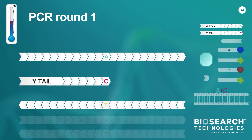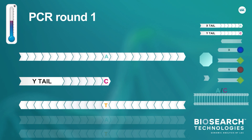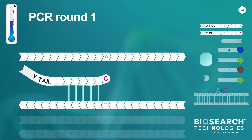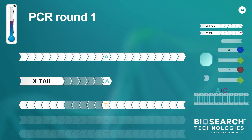The target-specific part of these primers is complementary to the template DNA. The base difference at the 3' end corresponds to the SNP target, and it is this difference that drives the competitive PCR. Both primers have the potential to anneal to the template DNA, but the primer that does not contain the correct base at its 3' end will be outcompeted by the allele-specific primer that is 100% complementary to the template DNA.